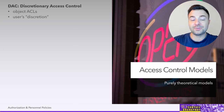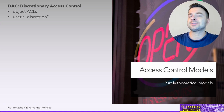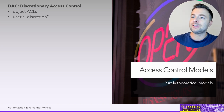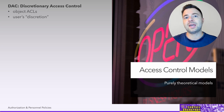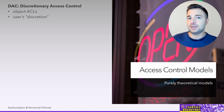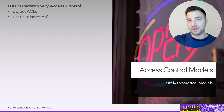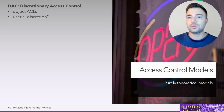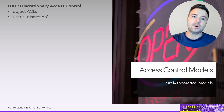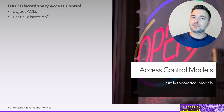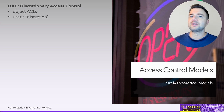The first model is Discretionary Access Control (DAC). Discretionary means it's at your discretion — or the user's discretion — who else has access to a specific resource. This is exactly what happens in Windows, Linux, and macOS networks today. You create a file or folder, right-click on it, and set security permissions — who you want to give access to. If you are the owner of that resource, you are responsible for providing additional access to it.